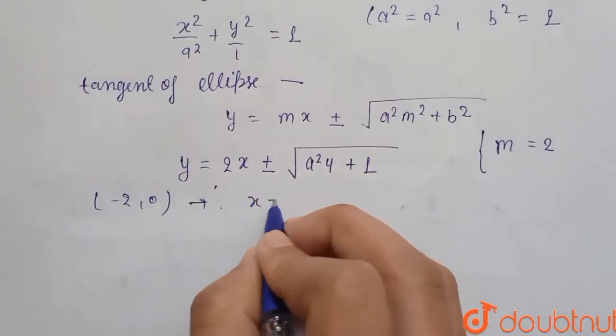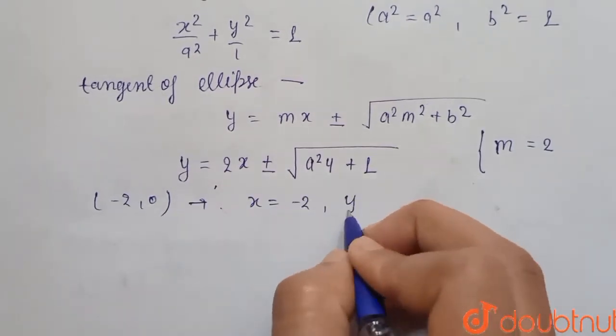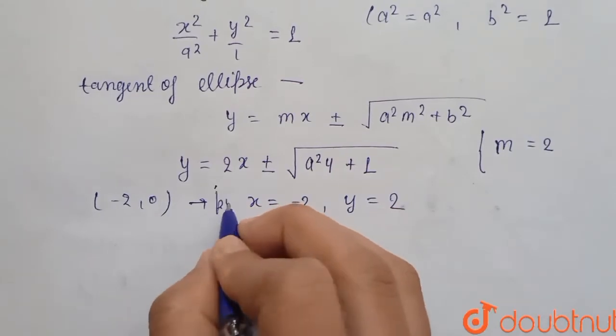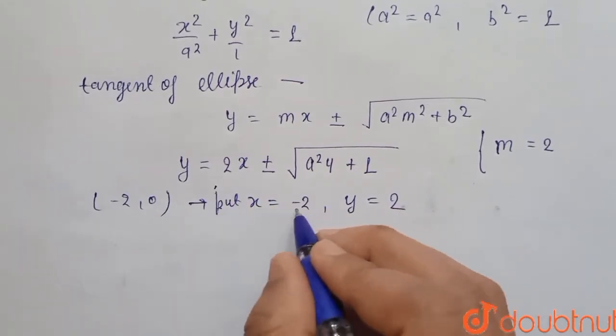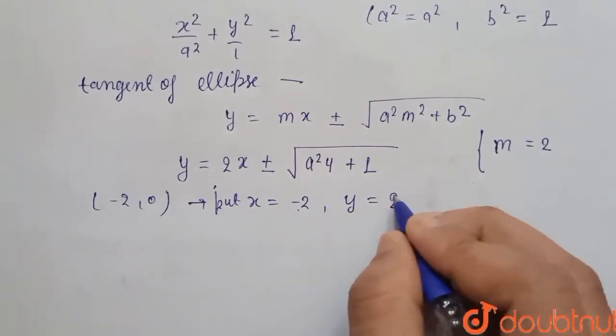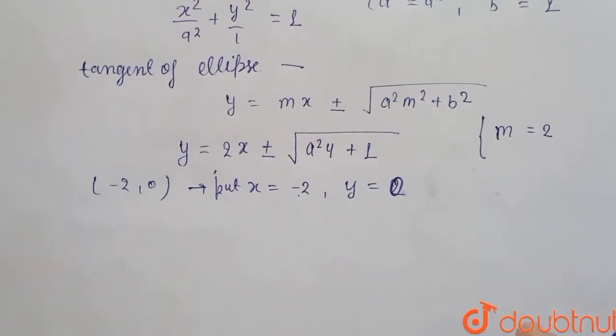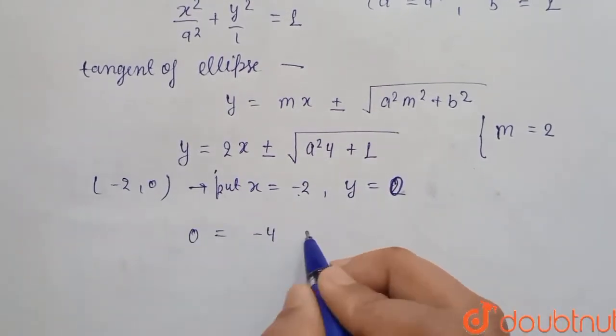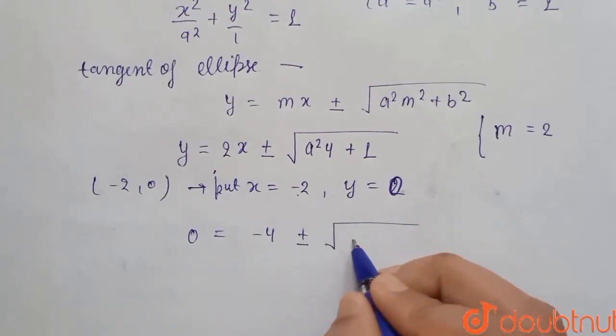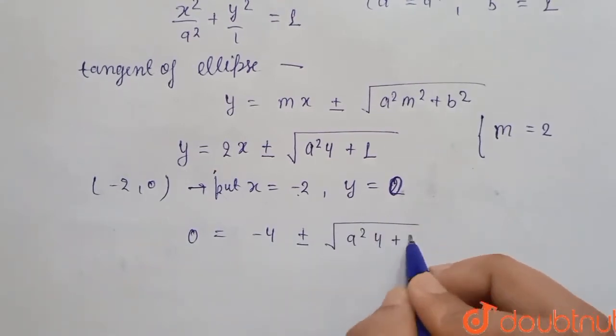Here put x = -2 and y = 0. So we get here 0 = -4 ± √(a²·4 + 1).